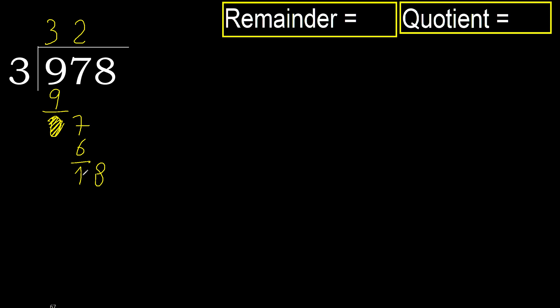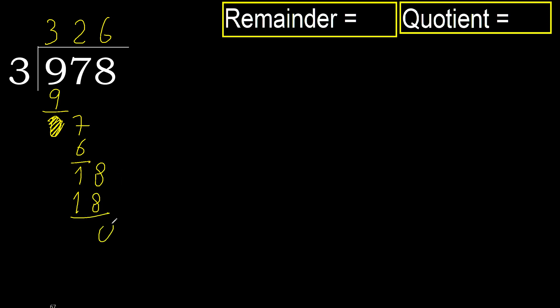18. 3 multiplied by 6 is 18, which is not greater. Subtract. Next.